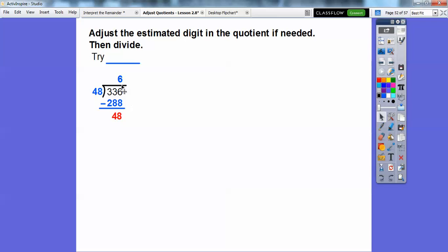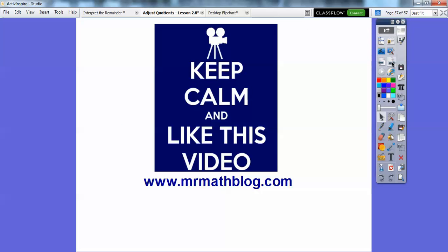Let's adjust the estimated digit in the quotient if needed. Instead of doing 6, because I can get another group, we're going to try 7. Here it is: 48 times 7. It's 336 exactly. So we get a remainder of 0. Our answer on this would have been just 7. All right, take care.